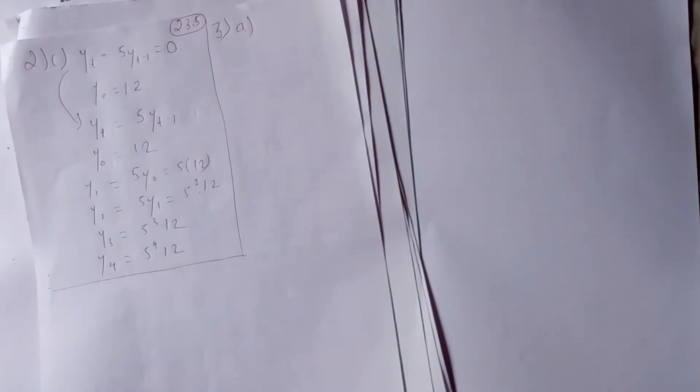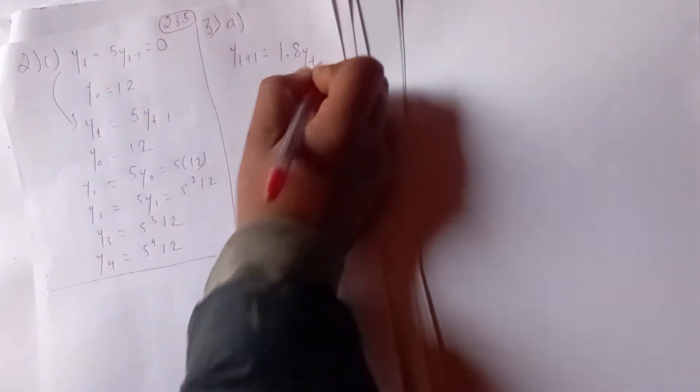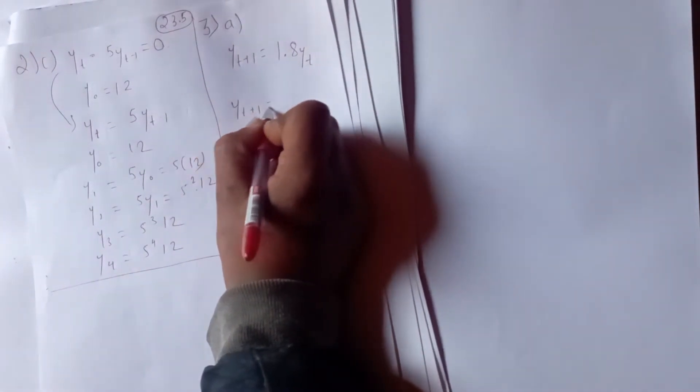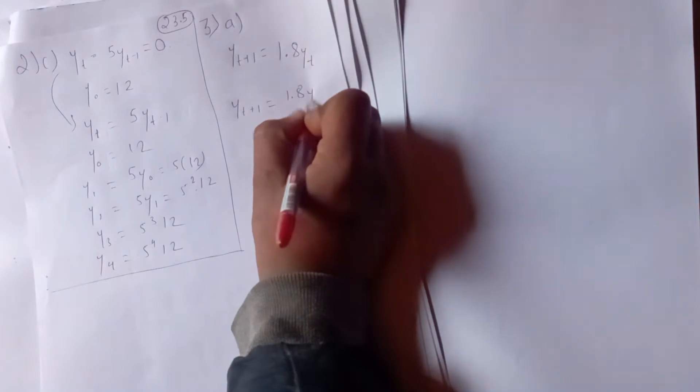The difference equation is yt plus 1 equals 1.8 times y of t. Solve the equation for the periods 2, 3, and 4, given that the income in year 1 is 12,500.